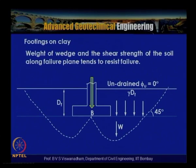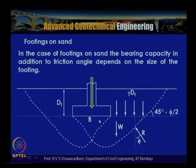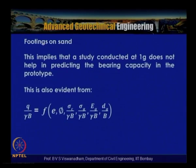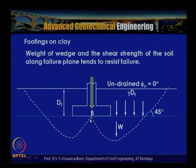For footings on clay under undrained condition, phi_u equals 0 and resistance comes only from c_u — the shear strength of the soil. The weight of the wedge and shear strength along the failure plane resist failure. The failure planes are distinctly different from those in sand: in sand an elastic wedge forms and the failure plane shifts vertically downward due to friction from the surrounding sandy soil; in clay this friction is absent, so the elastic wedge is non-existent.